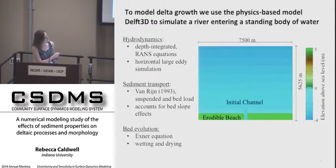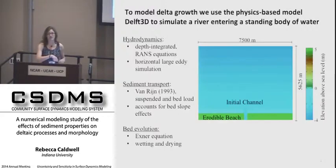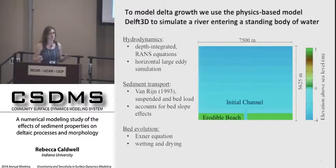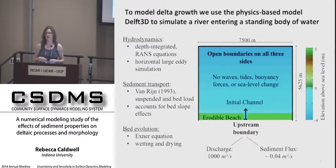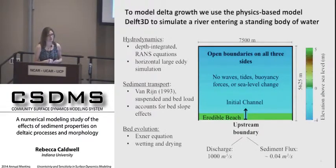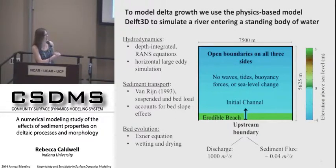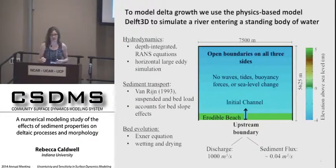Here you see the model setup in plan view, where bed elevation is represented by a range of colors. You can see the initial channel cuts through an erodible beach, entering a standing body of water in a basin with a gentle offshore slope. To the north, east, and west, we apply open boundaries with a constant water elevation. In the basin, we're ignoring the effects of waves, tides, and buoyancy forces. Flow enters the domain through the initial channel from the south, carrying a constant water discharge and a sediment flux of approximately 0.04 meters cubed per second.